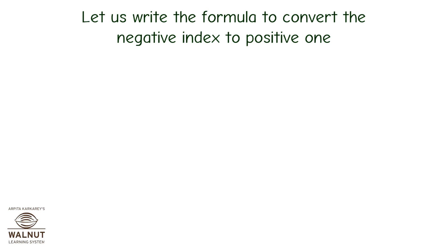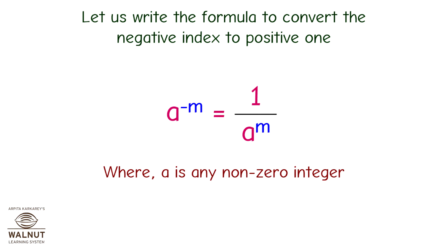Let us write the formula to convert the negative index to positive: a raised to minus m is equal to 1 upon a raised to m, where a is any non-zero integer and m is a negative exponent.